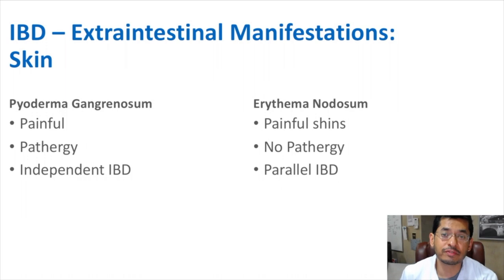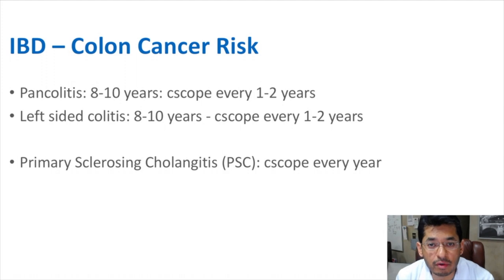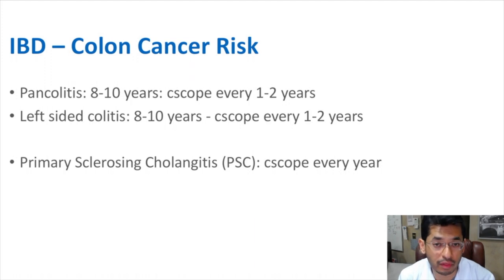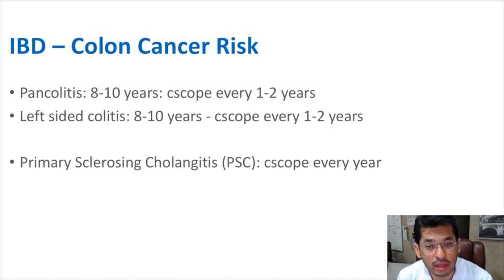Lastly, I want to talk about the risk for colon cancer, because this is an important risk to be aware of. The risk depends on how long you have the disease, specifically with ulcerative colitis. If you have ulcerative colitis for a long time — about 8 to 10 years — you have a substantially higher risk for developing colon cancer. Even if you're doing well and on therapy, you need more frequent colonoscopies. There's another disease called primary sclerosing cholangitis, or PSC, which can come with IBD and also puts patients at high risk for colon cancer — these patients typically need a colonoscopy at least once every year.